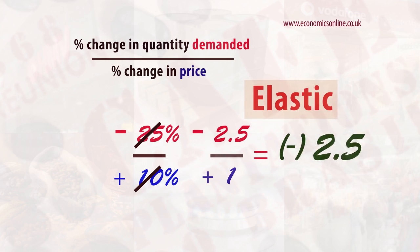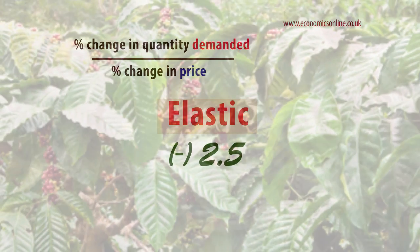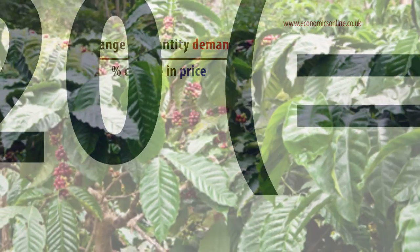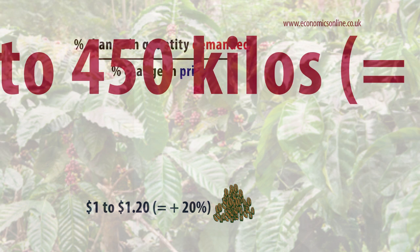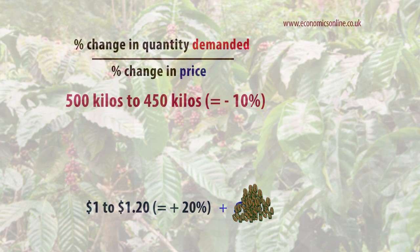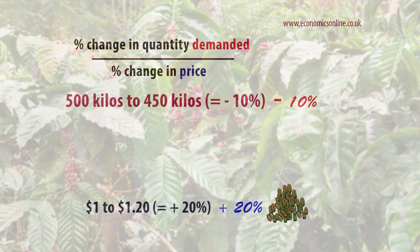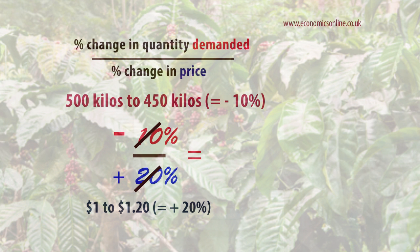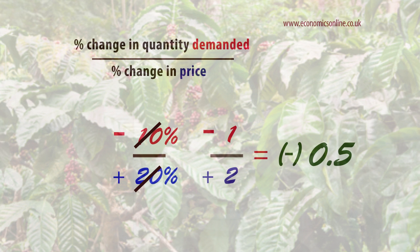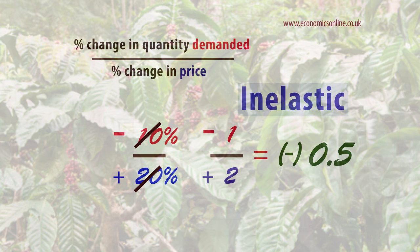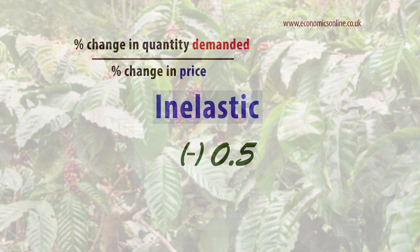For example, if coffee bean prices increase from $1 a kilo to $1.20 and daily sales drop from 500 kilos to 450, PED is minus 10% over plus 20%, which gives an answer of minus 0.5, which is inelastic.